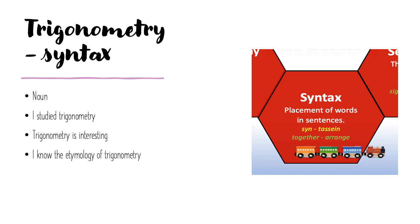So the next hexagon in Lexicon is the syntax hexagon. Syntax means the placement of words in a sentence — so it's where the word would go. In order to know where to place a word, you need to know what type of word it is. Trigonometry, because it's a thing, is a noun. So I know that in my sentence I'm going to put it either with a verb or maybe with an adjective. So I could say: I studied trigonometry. Trigonometry is interesting. I know the etymology of trigonometry. For nouns it's fairly straightforward, but where syntax gets interesting is when you've got a verb and you have to look at the different verb endings and different tenses — that's where you can really develop your knowledge of that word further by looking at how it would fit into different types of sentences.